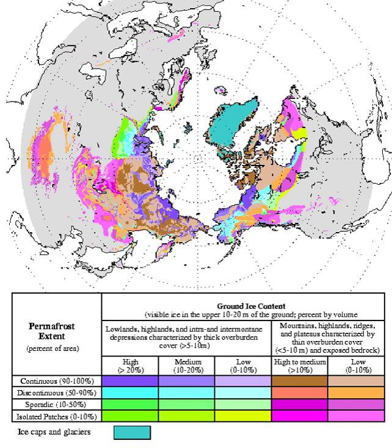Most permafrost is located in high latitudes in and around the Arctic and Antarctic regions, but at lower latitudes, alpine permafrost occurs at higher elevations.